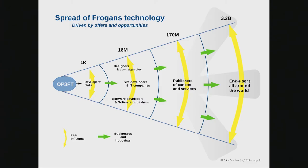On this slide, starting from the right, you can see that there are over 3 billion users. At least 170 million websites — publishers of content — probably far more. And behind that, a technical community with several million developers, designers, agencies. And to the far right, we see OP3FT — about 30 people, and ultimately maybe 300 people at several sites. So of course, it's not symmetrical with the number of web users.